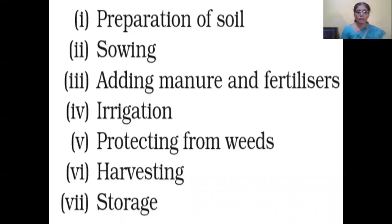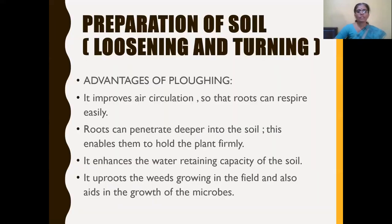In the last session, we learned about the first three stages of agricultural practices: preparation of soil, sowing, and adding manure and fertilizers. Now let's recall what preparation of soil involves.